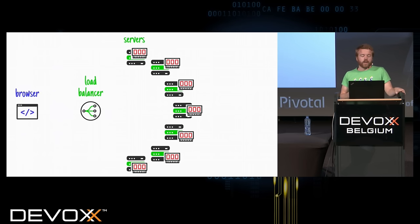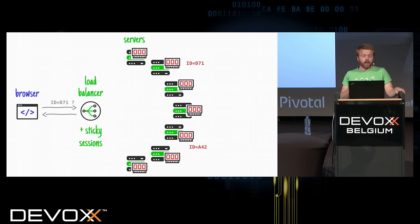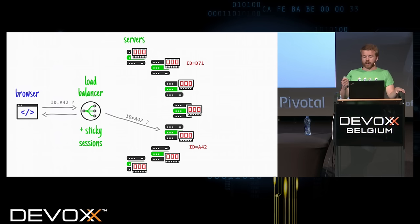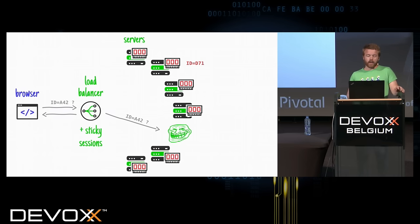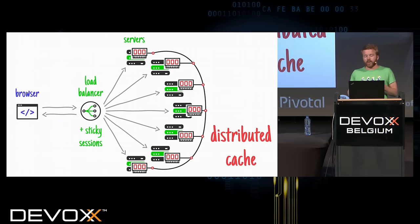Another solution would be to put some intelligence in the load balancer — something called sticky sessions. When a request arrives, like D71, the load balancer knows exactly where to send it. And if it's A42, A42 goes to the same place. But if that node falls, we have a bit of a problem. That's where all solutions are not really silver bullets.